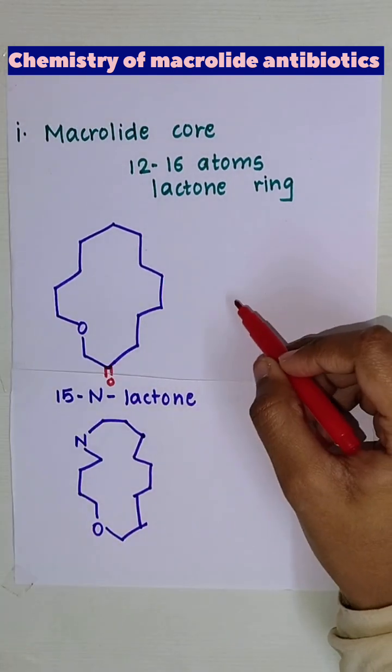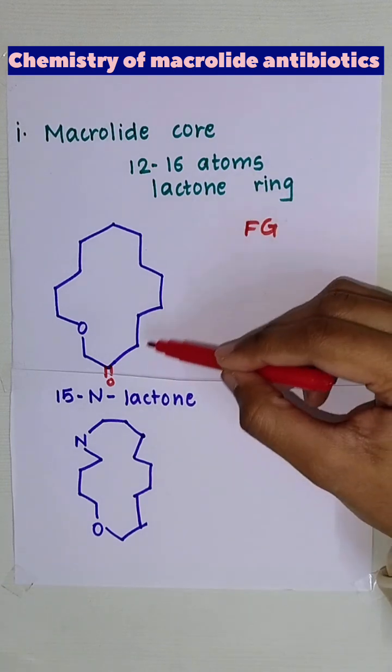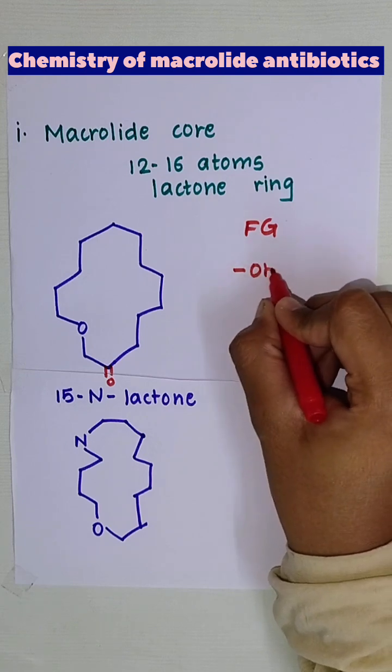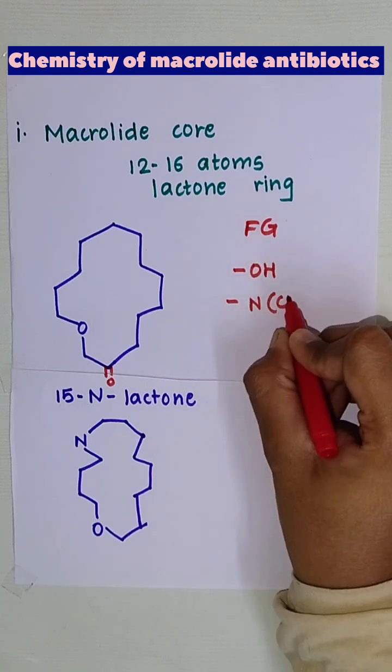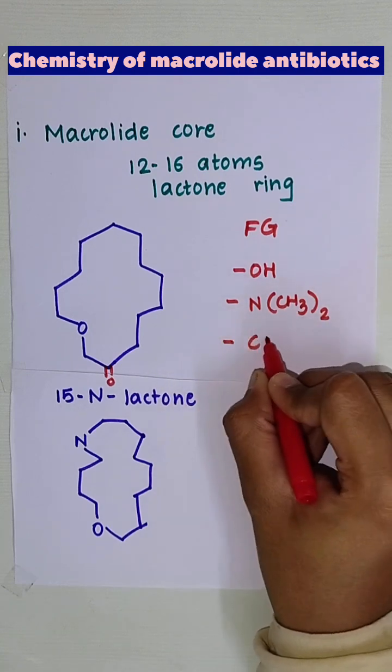Second important structural feature is the functional groups present. On this lactone ring there are various functional groups present such as OH alcoholic group, dimethylamino group and the ketone group.